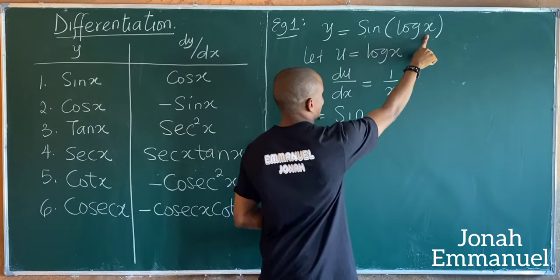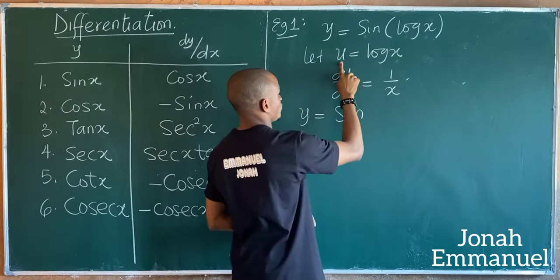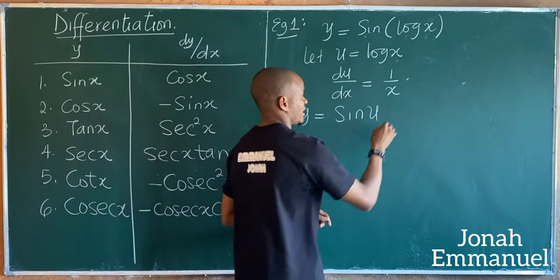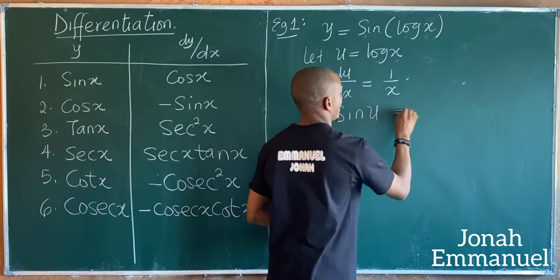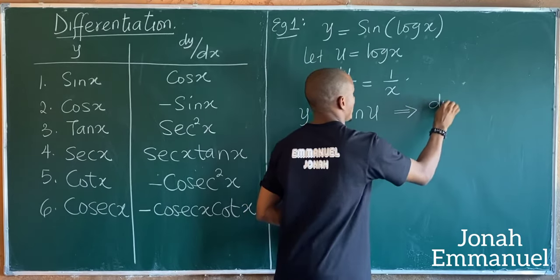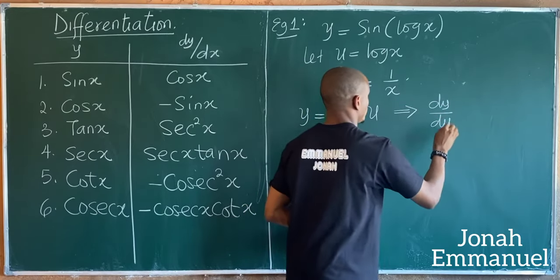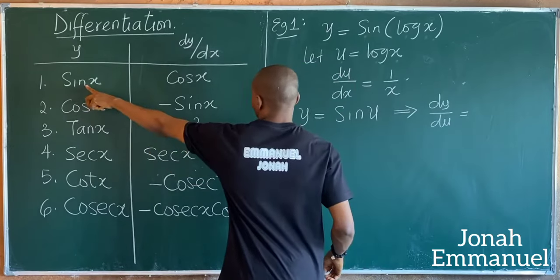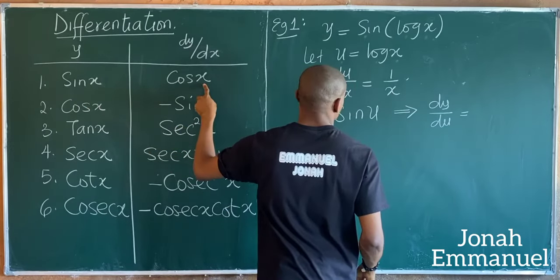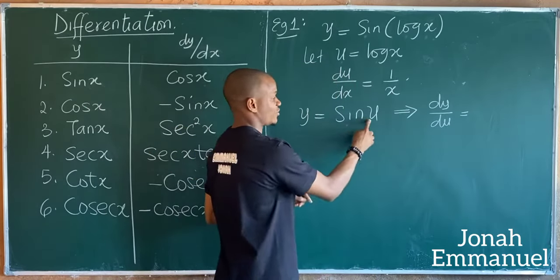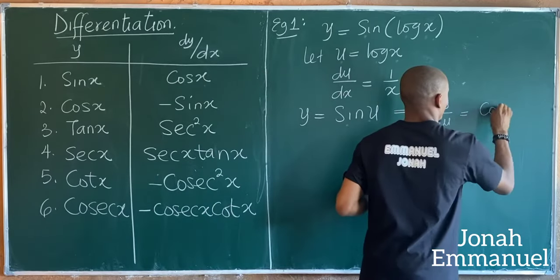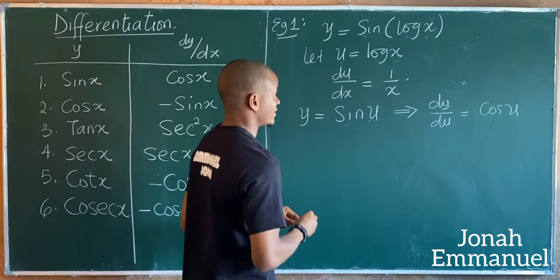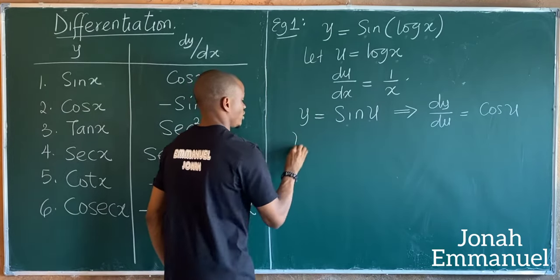Next, y is now equal to sin(log x), but we just said log(x) is equal to u, so therefore y becomes sin(u). If I differentiate y with respect to u, I will have that dy/du is equal to — since differentiating sin(x) gives cos(x) — similarly differentiating sin(u) gives cos(u).